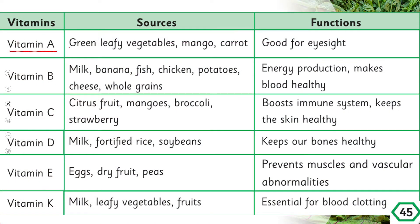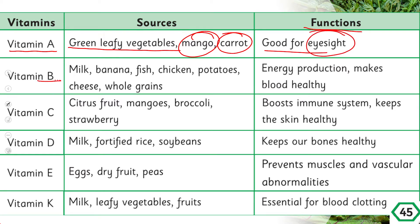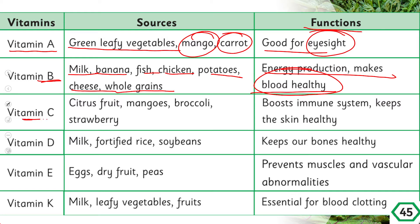Vitamin A: its sources are green leafy vegetables, mangoes, and carrots. Its function is good eyesight. Vitamin B: it is present in milk, bananas, fish, chicken, potatoes, cheese, and whole grains. Its function is energy production and making blood healthy. Vitamin C is a very important vitamin — it is present in citrus fruits, mangoes, broccoli, and strawberries.